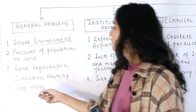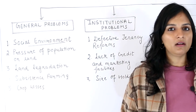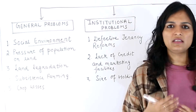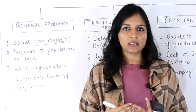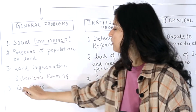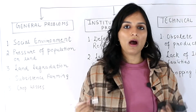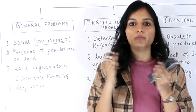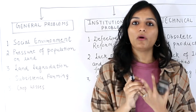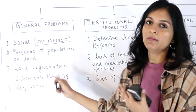Then there are crop losses. Untimely rain, drought, flood, pesticide issues, weed, or other problems cause overall crop losses and crop damage. Disease happens in the crop, and whatever output your crop should give, you don't achieve it. This is one kind of problem in agriculture — these are the general problems.